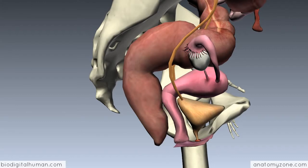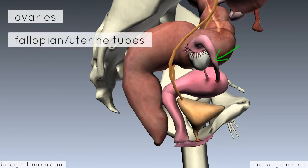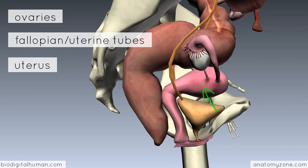The main parts I'm going to talk about are the ovaries, which are the primary female sex organ. Then you've got the fallopian tubes, or the uterine tubes as they're also known, which connect to the uterus — this muscular sac where the embryo develops into a fetus and then into a baby. And then you've got the vagina, which opens up in the perineum.